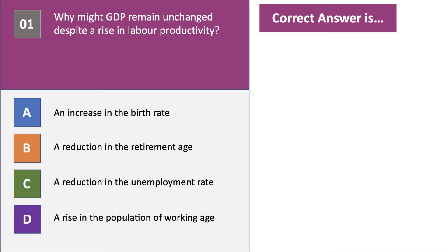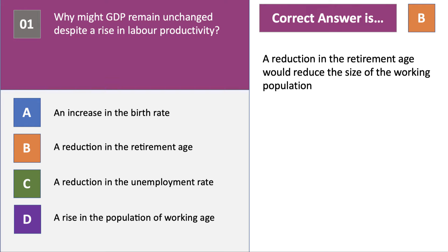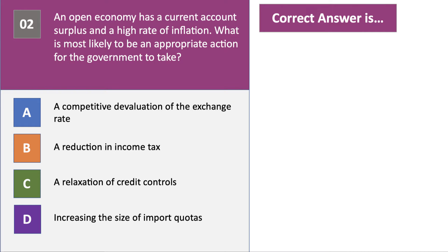GDP might remain unchanged even if labor productivity rises because of option B — a reduction in retirement age. If we cut the retirement age, that lowers the size of the working population. Output per worker may be higher, but the total number of people in the labor force may have diminished.